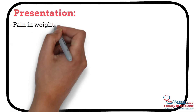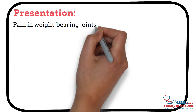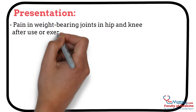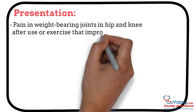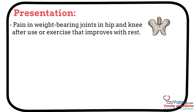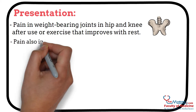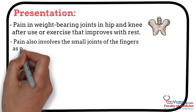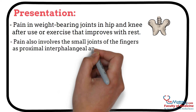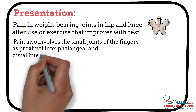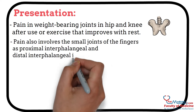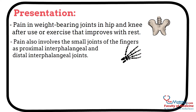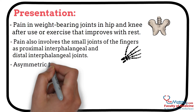Presentation: Pain in weight-bearing joints — the hip and knee — after use or exercise, which improves with rest. Pain also involves the small joints of the fingers, including the proximal interphalangeal and distal interphalangeal joints. Joint involvement is asymmetric.